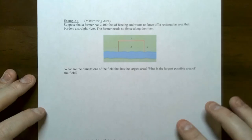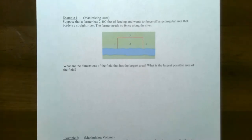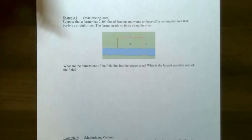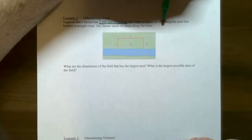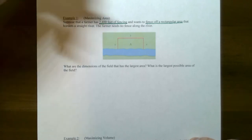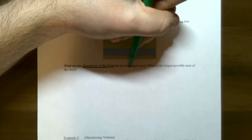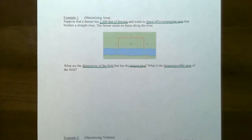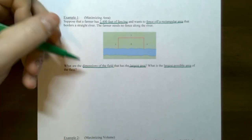We're going to start with two very simple problems. You've probably seen these from pre-calculus, but we're going to use the optimization steps to find the absolute maximum and minimum. Example one: suppose a farmer has 2400 feet of fence and wants to fence off a rectangular region where one side faces a straight river, so no fence is needed for that side. What are the dimensions that give the largest area, and what is the largest area? This function turns out to be a quadratic.